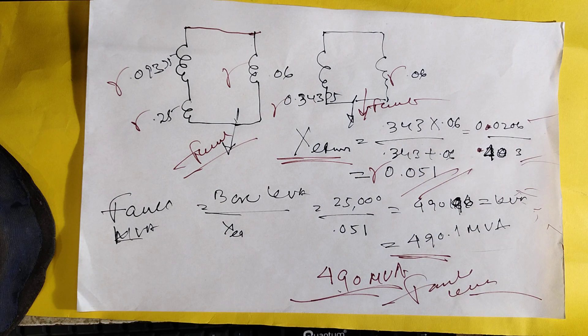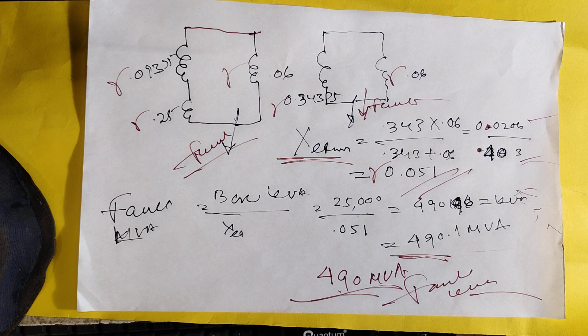The equivalent reactance is coming 0.051 per unit. Your base KVA, fault KVA is the base KVA divided by per unit X, equivalent reactance. So 25,000 KVA divided by 0.051 is equal to 490 MVA. So your fault MVA is 490 MVA.